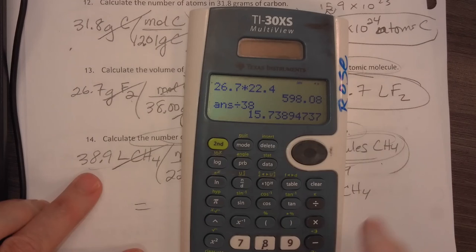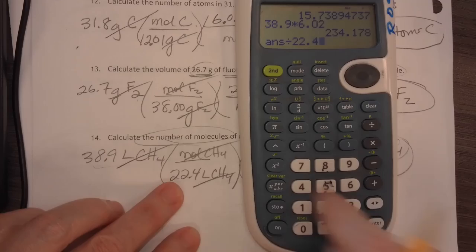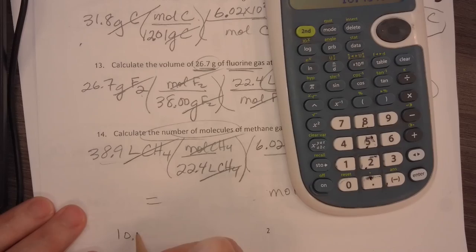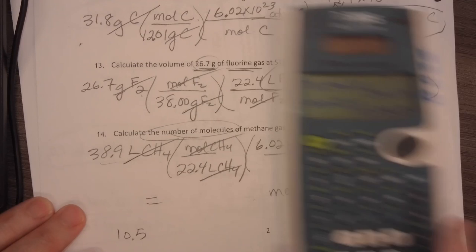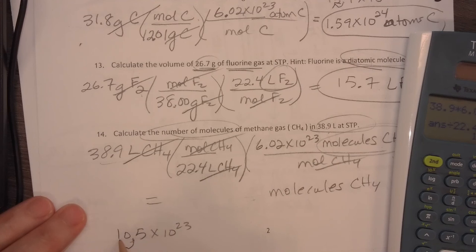Now let's see what I have here. I'm going to pretend I don't have a fancy calculator. I'm going to take 38.9 times 6.02, divide by 22.4, and I have, I'm going to put it down here, 10.45. I need three significant figures, so I'm going to say 10.5 times 10 to the 23rd. To do that, if I don't have a fancy calculator, I have to change that to 1.05. And then I move that up, 1, and I have 1.05 times 10 to the 24th molecules of methane. That's it for page 2.